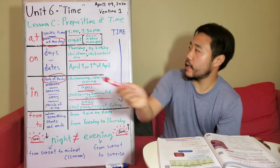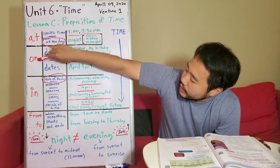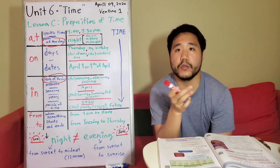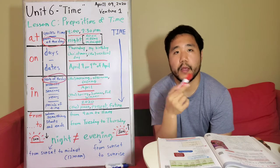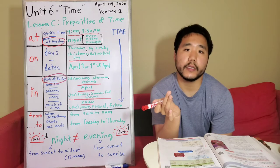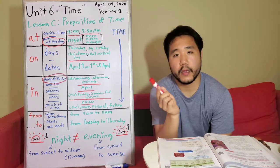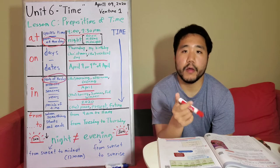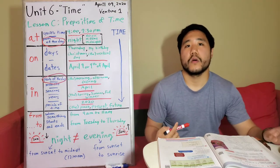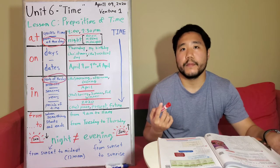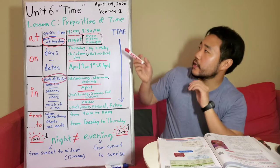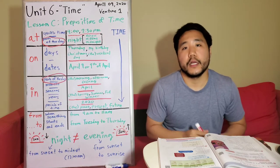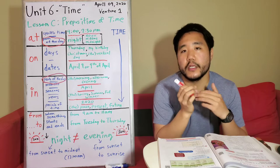We learned that the words at, on, in, and from/to are prepositions that are used to talk about time. Time can be expressed in many ways, such as clock time, a day or date, part of a day, month, or year. So with that in mind, we're going to look at this prepositions of time chart that I created, and look at how each preposition is used differently.